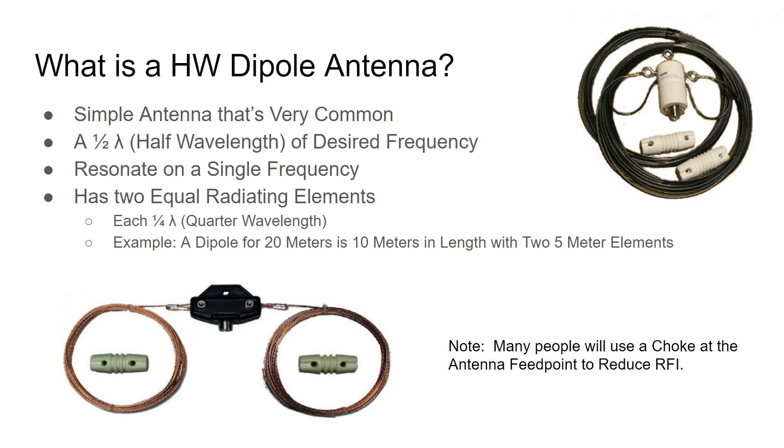A half-wavelength dipole has two equal radiating elements. Each is a quarter of a wavelength in length. Now, an example would be a dipole for 20 meters is 10 meters in length with two 5-meter elements. Seems pretty simple, right?